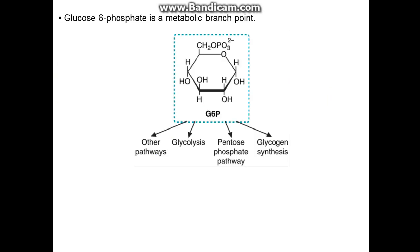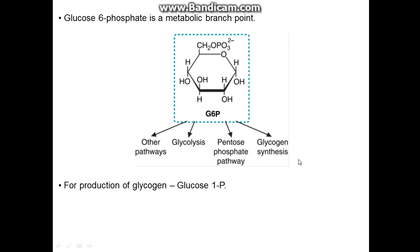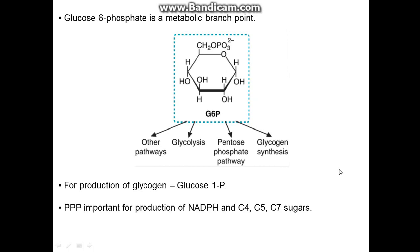Glucose-6-phosphate is actually a metabolic branch point — it can go down multiple pathways and is not restricted to glycolysis. The main ones are the pentose phosphate pathway and glycogen synthesis. For glycogen, it's converted to glucose-1-phosphate, with the phosphate on a different carbon. The pentose phosphate pathway is important for the production of NADPH, and C4, C5, and C7 sugars — which just describes the length of the carbon backbone: 4 carbons, 5 carbons, and so on.